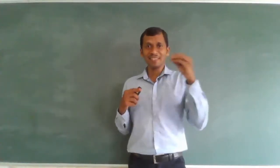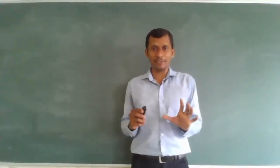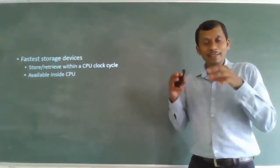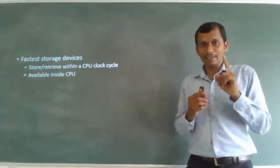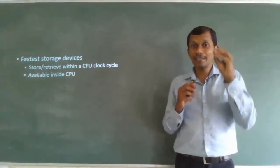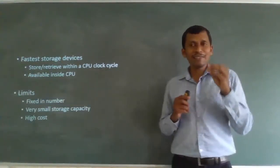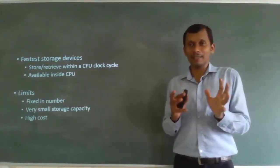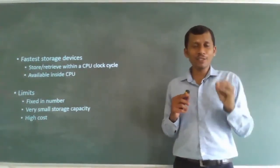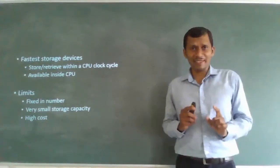Let's learn what are the fastest storage devices inside a microprocessor or inside a desktop computer. These are available inside the CPU itself and they are very fast — they can store or retrieve data within a clock cycle of the processor. They are very limited in number, fixed in size, with very small storage capacity but very high cost. These are nothing but the registers.